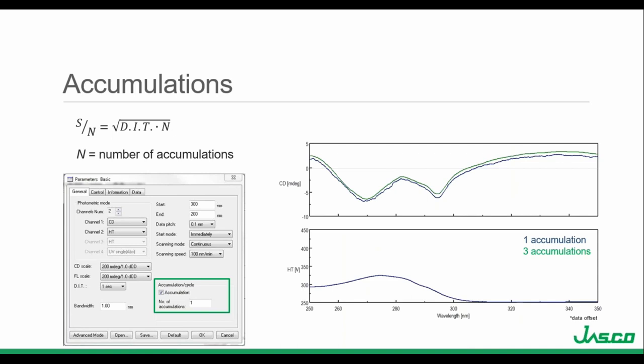Once we have optimized the scanning speed and DIT, if the signal to noise is still relatively low, we can look at increasing the number of spectrum accumulations — the number of spectral scans automatically obtained and averaged together. The spectrum signal to noise is proportional to the square root of the DIT multiplied by the number of accumulations. While increasing accumulations improves signal to noise, it also increases measurement acquisition time since the measurement is repeated for each accumulation. Selecting accumulations means each individual measurement will not be saved — only the average accumulated scan. The spectra on the right show a single scan in blue and three accumulated scans in green, and the accumulated scan has better signal to noise.